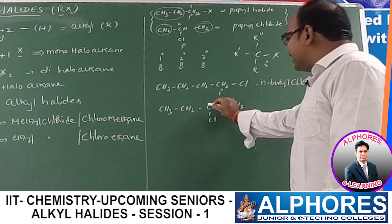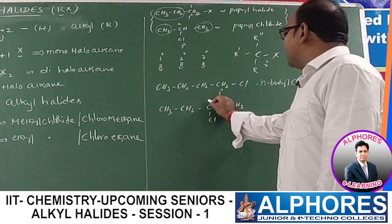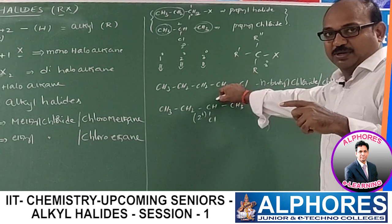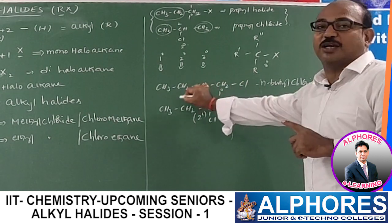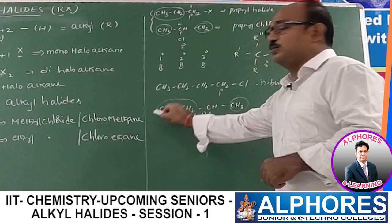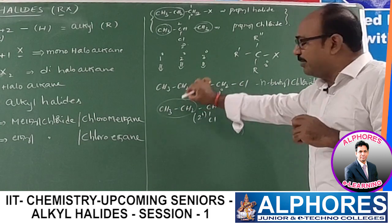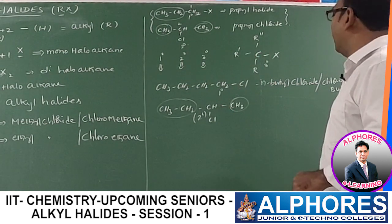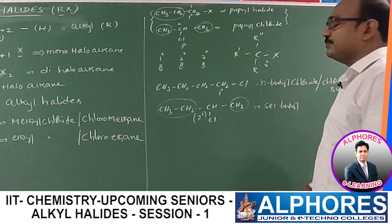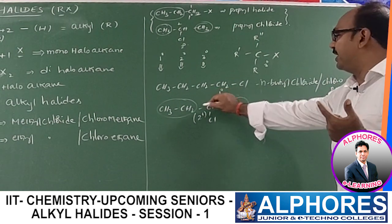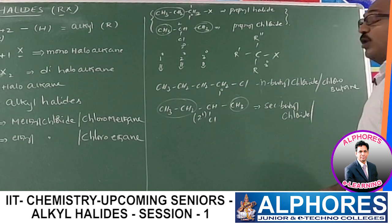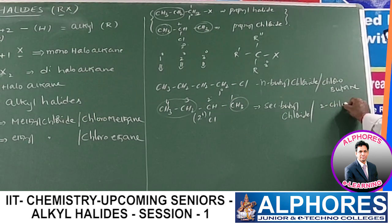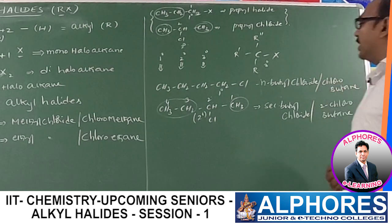Because the chlorine-containing carbon is attached to two alkyl groups — one methyl and one ethyl — it is secondary, regardless of whether the alkyl groups are same or different. This compound is named secondary butyl chloride. The IUPAC name is 2-chlorobutane, since numbering gives chlorine at carbon 2 of a four-carbon chain.